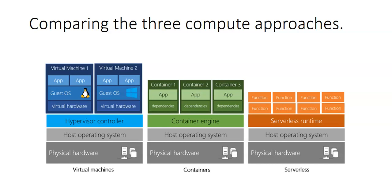Let's compare the three compute approaches: virtual machines, containers, and serverless. For virtual machines, the physical hardware has a host operating system, then a hypervisor such as VMware or Hyper-V is installed, and virtual machines run on top of that hypervisor. Containers run more directly on the physical hardware, using CPU and RAM from the kernel itself. In a serverless environment, you have functions, logic apps, and function apps running on physical hardware without managing the underlying OS.